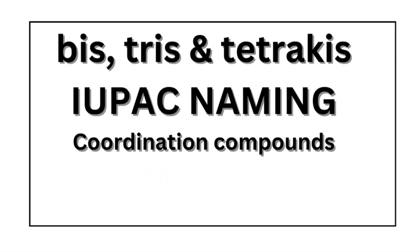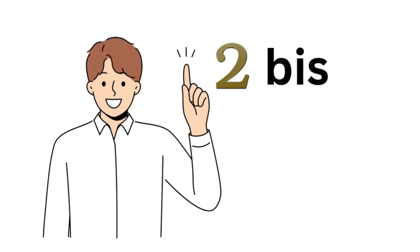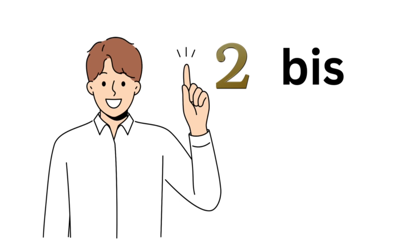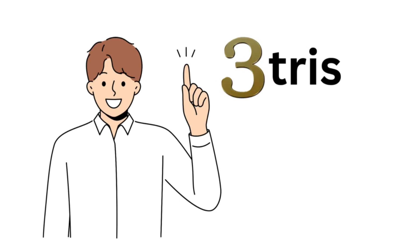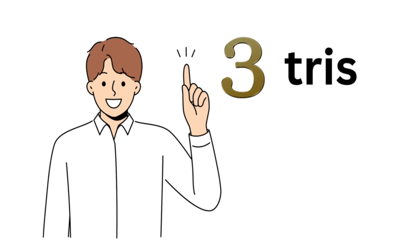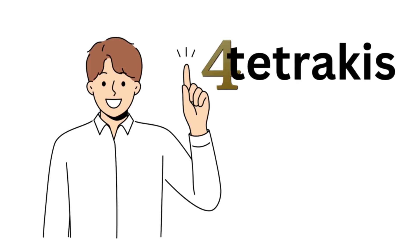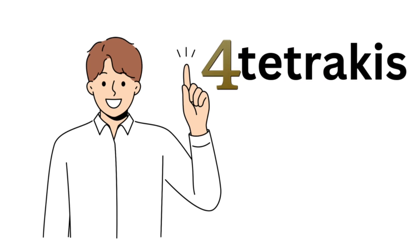Welcome to Aurora Chemistry for Everyone. In this video we are going to see the importance of using bis, tris, and tetrakis in IUPAC nomenclature of coordination compounds. These are the prefixes which are used for ligands that already contain a numerical prefix.